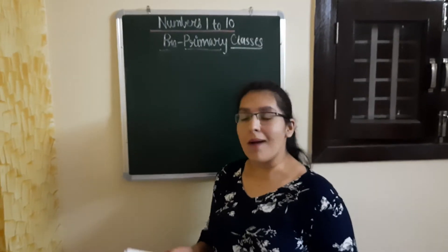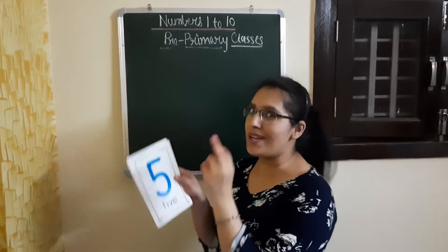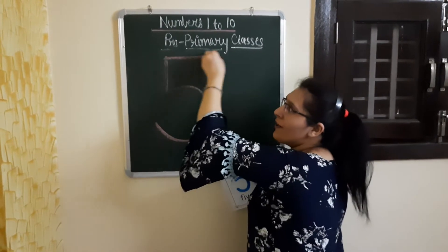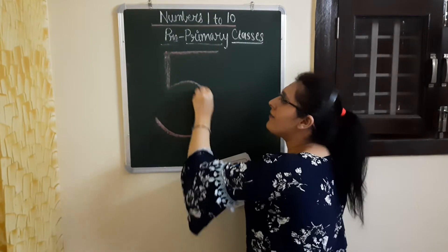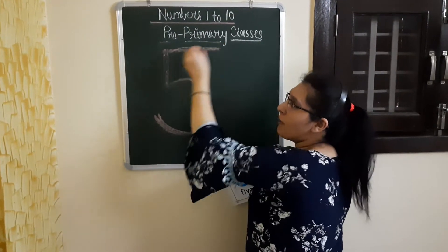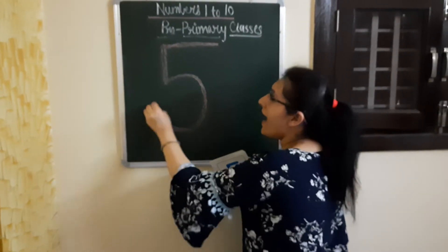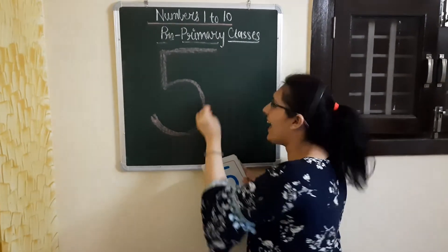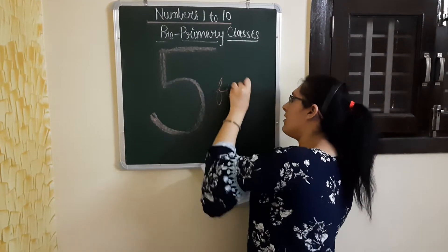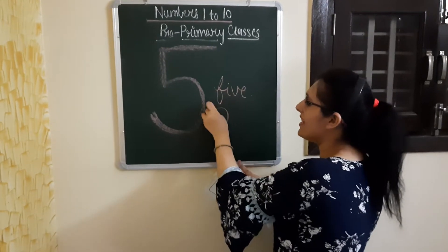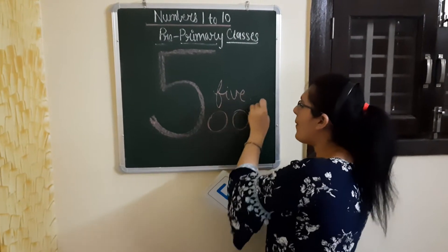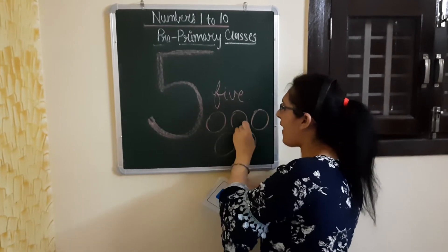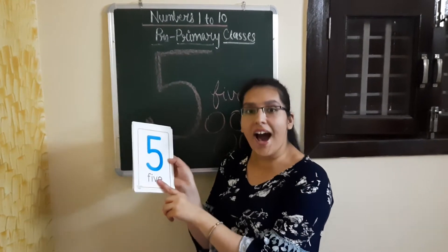Now comes number 5. So let us draw it: down and round and over the top. Down and round and over the top. This makes number 5. 1, 2, 3, 4, 5. This is number 5.